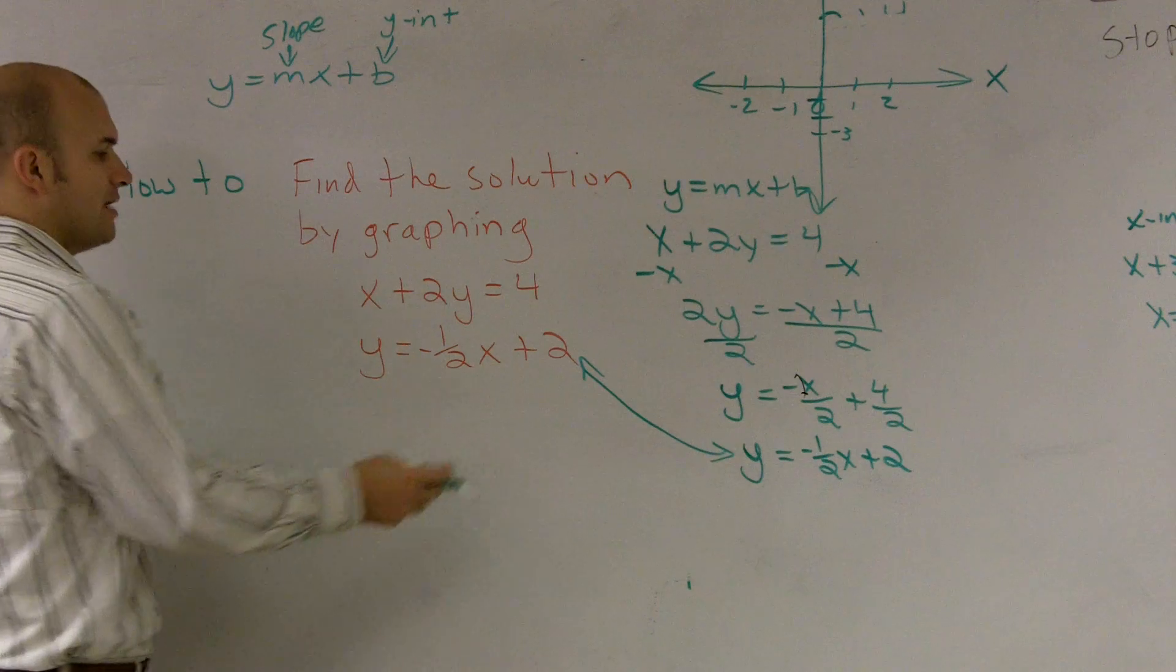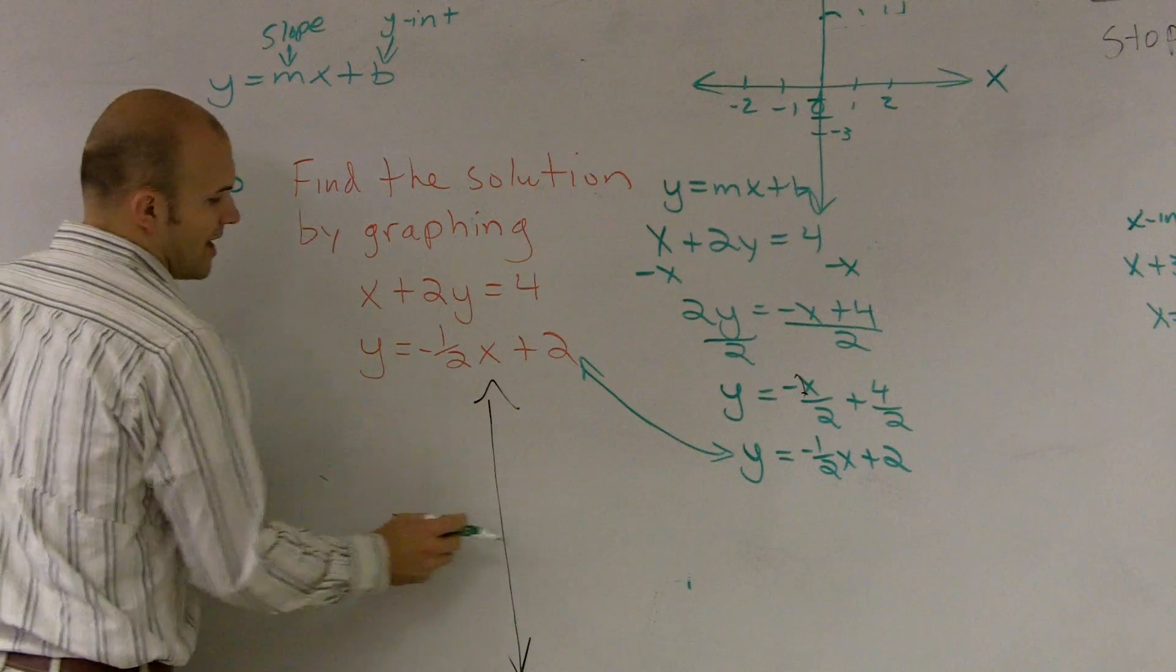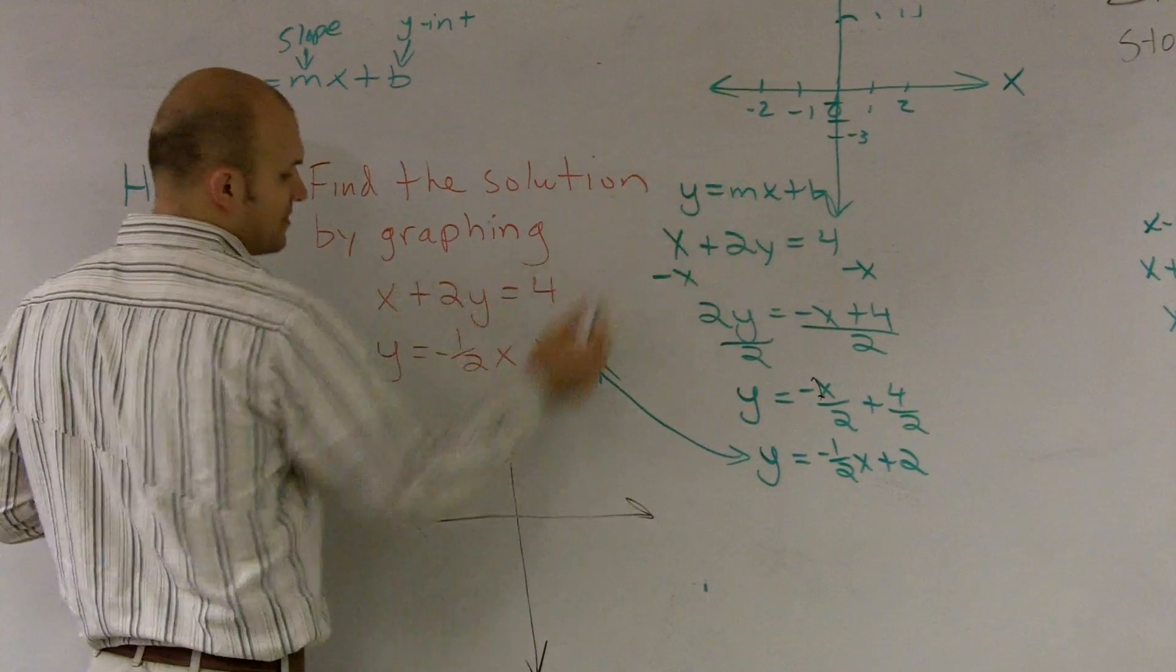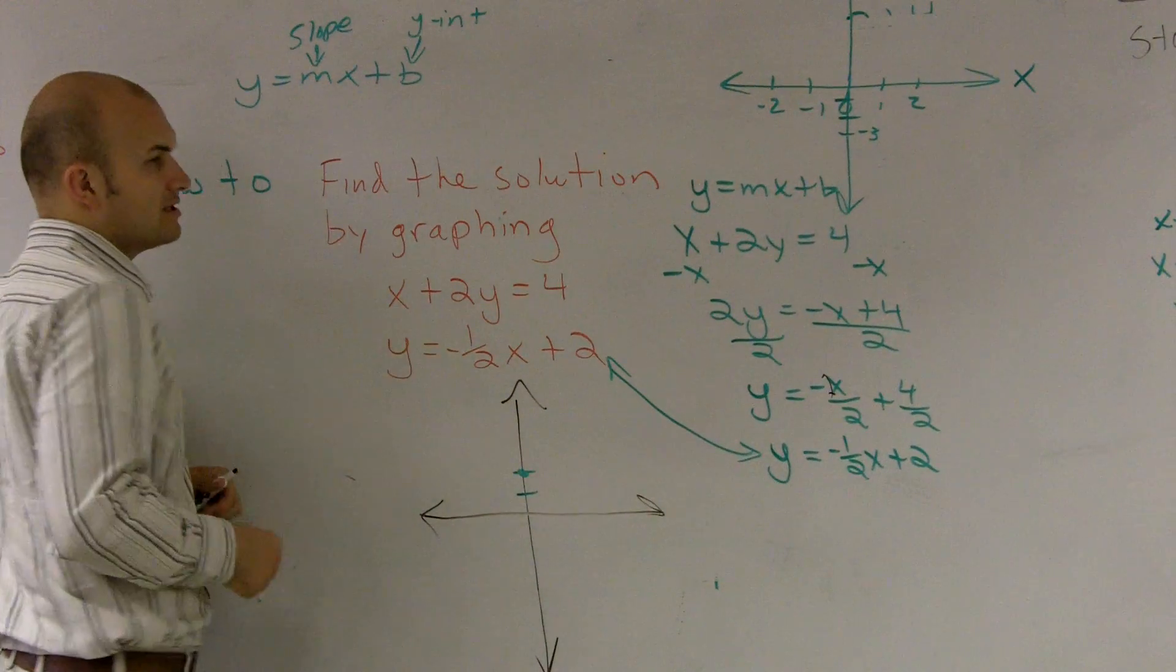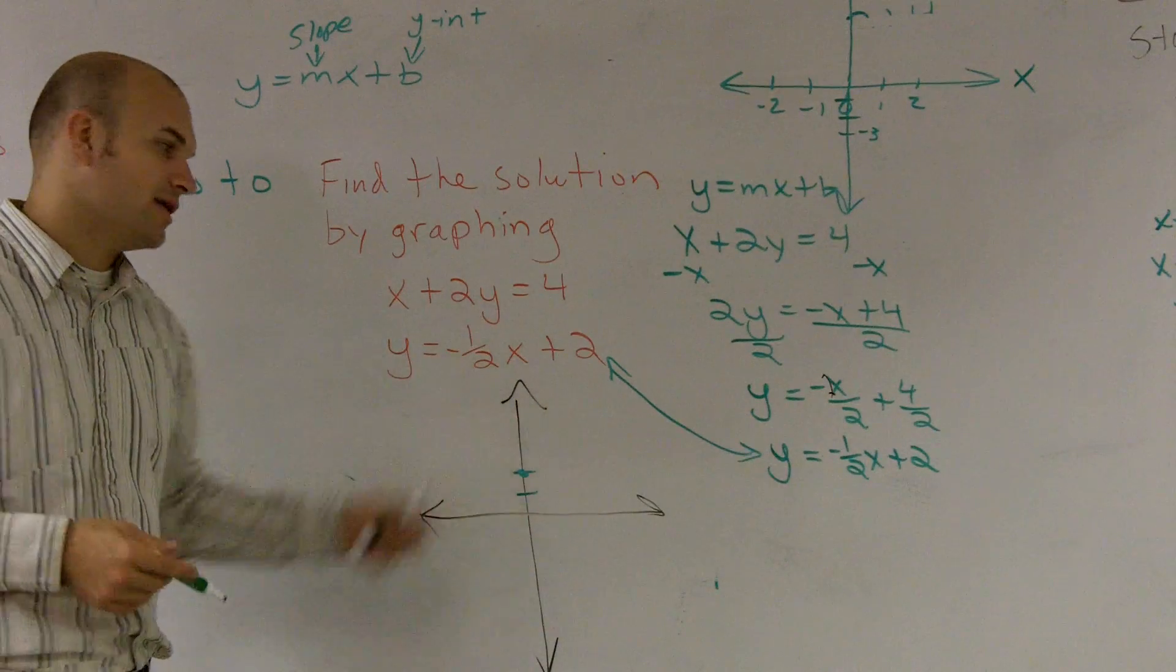So as I'm going to graph them, to graph a line that's in slope-intercept form, you first go to the y-intercept, which is your b, and you go up to 2. You make a nice big dot. Then you look at the slope, and you say from your point, the slope tells you where to go, up or down, right or left.